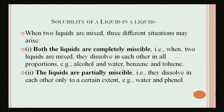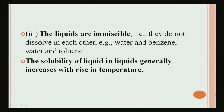For the solubility of liquid in liquids, when two liquids are mixed, three situations may arise: they are completely miscible (dissolving in all proportions, like alcohol in water or benzene and toluene); partially miscible (dissolving only to a certain extent, like water and phenol); or immiscible (not dissolving in each other, like water and benzene, or water and oil). The solubility of liquid in liquid generally increases with a rise in temperature.